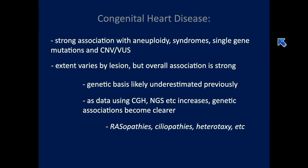Congenital heart disease has a very strong relationship with aneuploidy syndromes, single gene mutations, as well as copy number variants or variants of uncertain significance. The extent of that association differs significantly by lesion. Some lesions, such as typical d-transposition, are very weakly associated with any underlying genetic etiology, while others are very strongly associated.